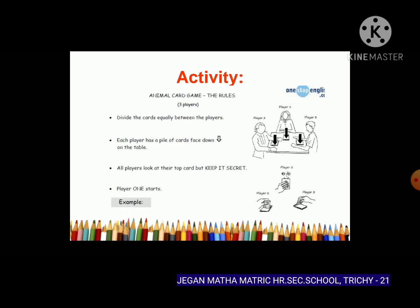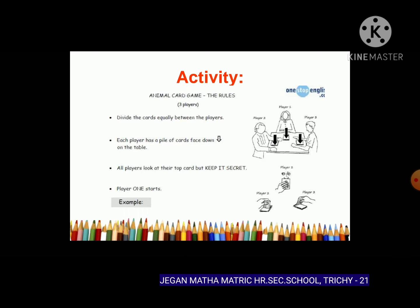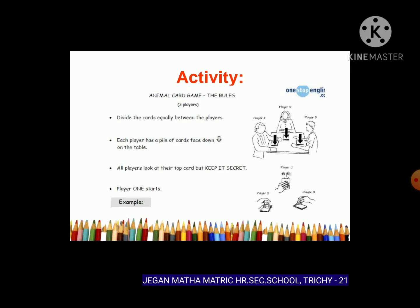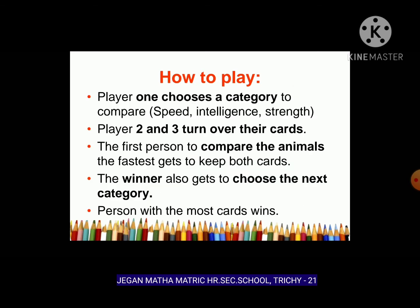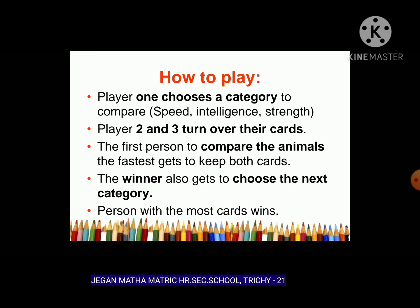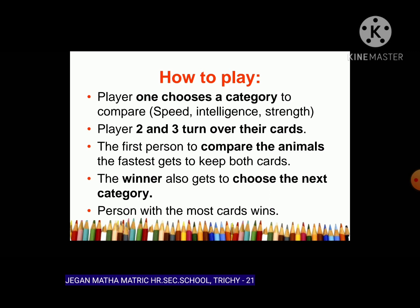Activity: Animal Card Game. Three players divide the cards equally, each with a pile face down. All players look at their top card but keep it secret. Player one chooses a category to compare — speed, intelligence, or strength. Players two and three turn over their cards. The first person to correctly compare the animals using positive and comparative degree keeps both cards.